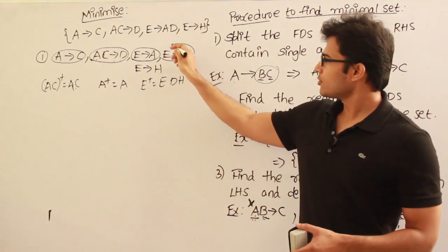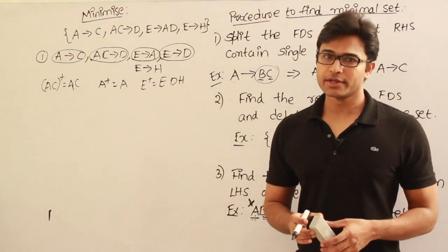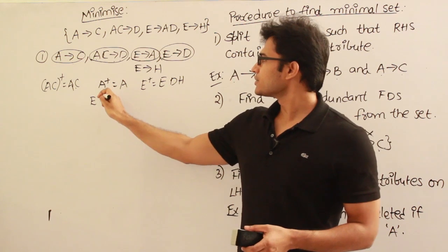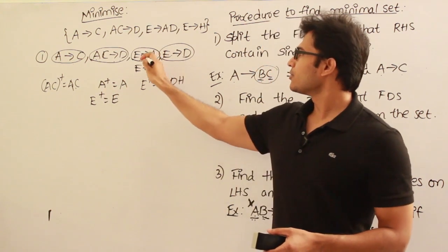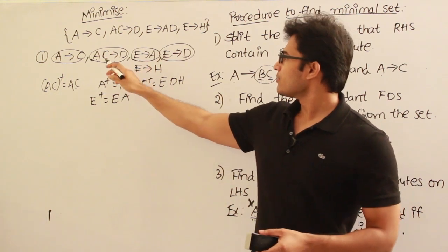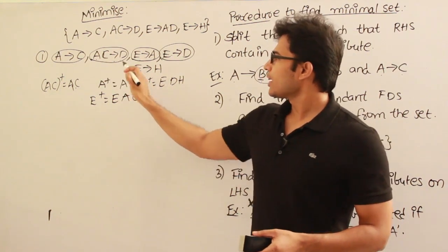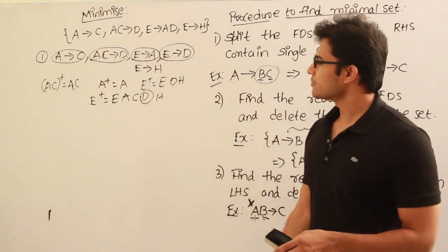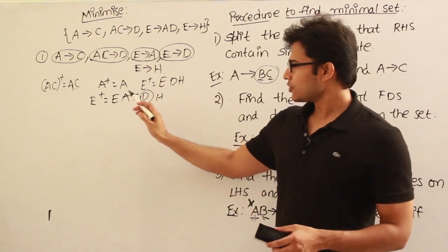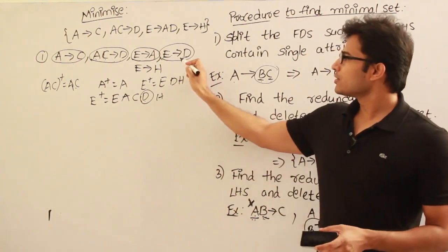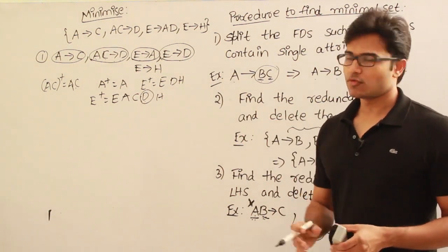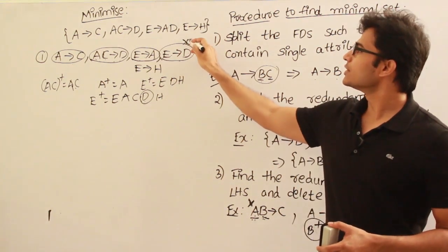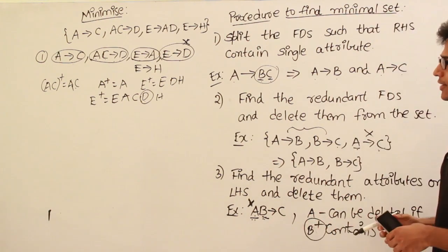What about E→D? Without this production, find E+ and see if D can be derived. E+ contains E, and because of E→A we get A, and because of A→C we get C, and because of AC→D we get D. So E+ is going to contain D even without E→D. Therefore this production is useless — this FD can be deleted.